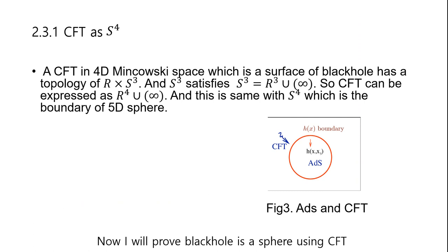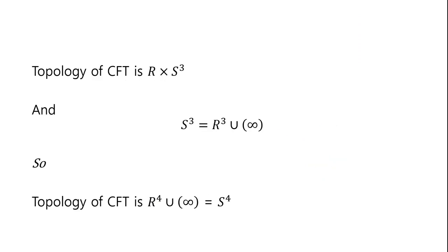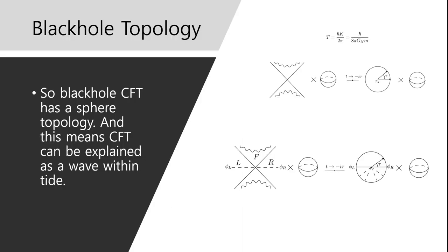Now I will prove a black hole is a sphere with CFT. A CFT in 4D Minkowski space is the surface of the black hole. A black hole has a topology of R multiplied by S3, and S3 is R3 plus infinity. So CFT can be expressed as R4 plus infinity, which is the same as S4 — the boundary of the 5-dimensional sphere. The topology of CFT is R multiplied by S3, and S3 is R3 plus infinity, so the topology of CFT is R4 plus infinity, which is S4. So black hole CFT has a sphere topology, meaning CFT can be explained as a wave with a tide.